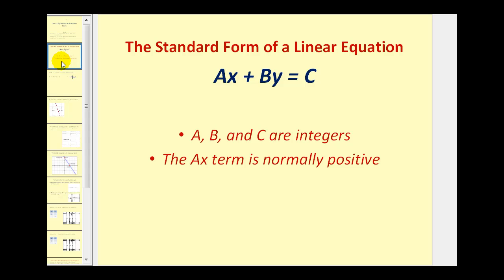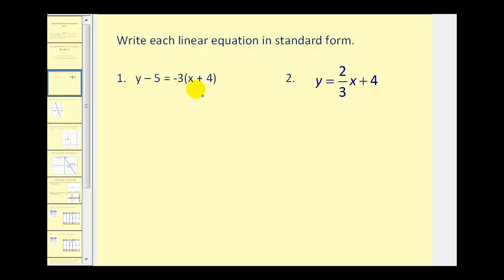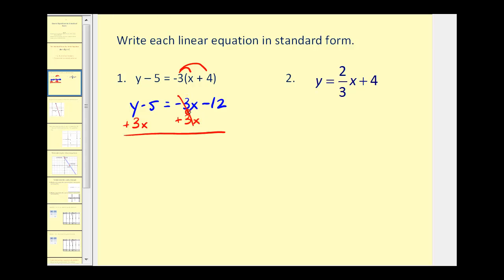Let's start by writing equations in standard form. Here we have point-slope form, and we want to rewrite this in standard form. We'll first clear the parentheses, so we'll have y minus 5 equals negative 3x minus 12. We know we need to have the x and the y terms on the left side and the constant on the right side. So let's go ahead and add 3x to both sides — this would be zero — leaving us with 3x plus y minus 5 equals negative 12.